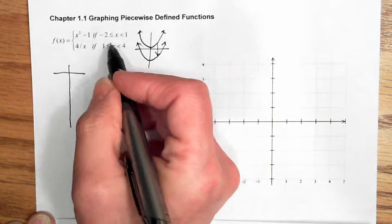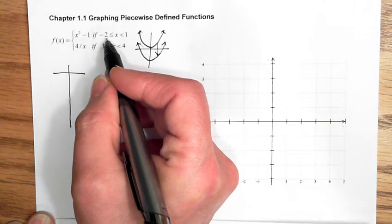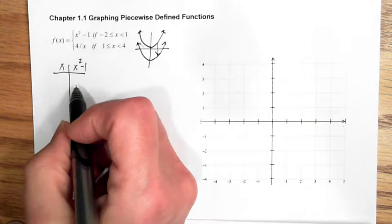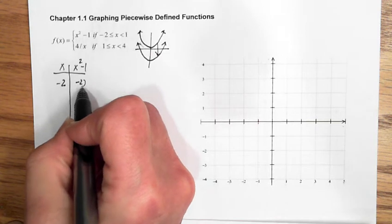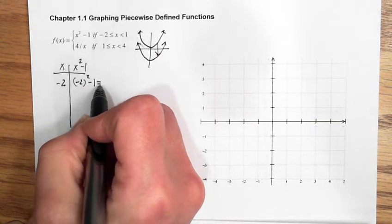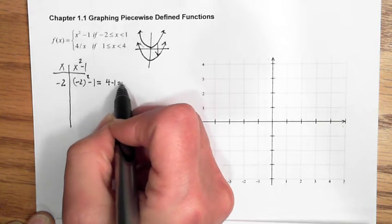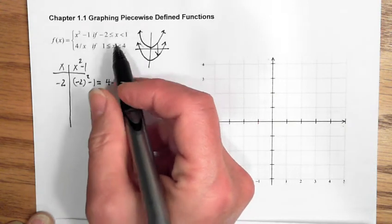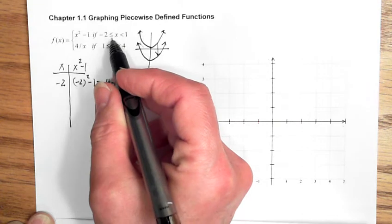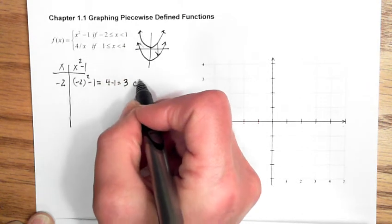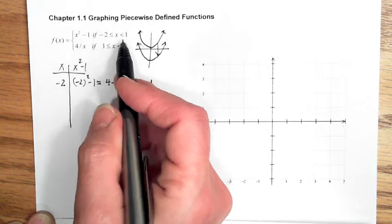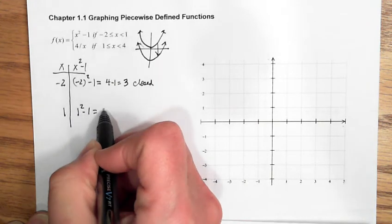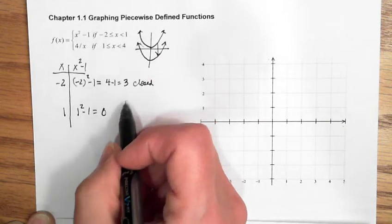Let's start with the endpoint values and see where they are. Using a t-diagram, at x = -2: (-2)² - 1 = 4 - 1 = 3. So the first ordered pair is (-2, 3), and that is a closed endpoint because the inequality includes -2. The other endpoint is at x = 1: 1² - 1 = 0, giving (1, 0), and that endpoint is open.